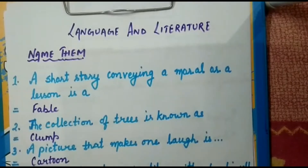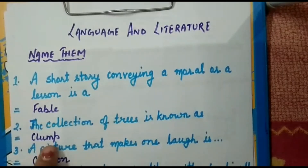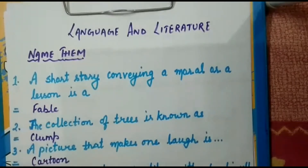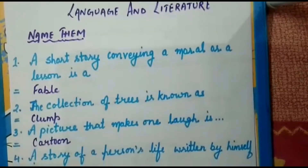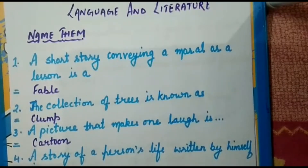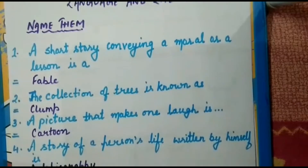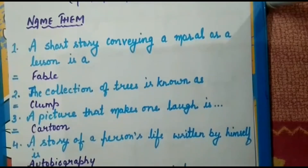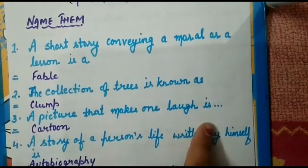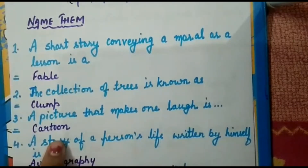Second: the collection of trees in one place is known as a clump — C-L-U-M-P. When there is a collection of trees, that is known as a clump. Third: a picture that makes one laugh is known as a cartoon.